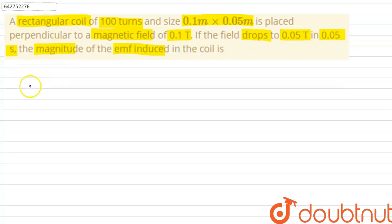The number of turns, which can be represented by letter N, is equals to 100. The time in which the value of magnetic field changed is 0.05 seconds.